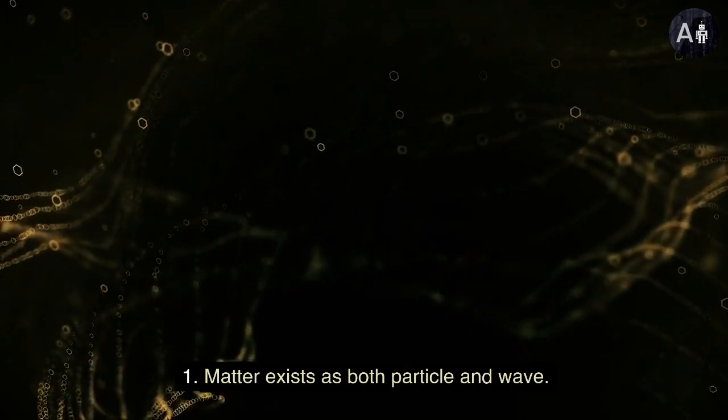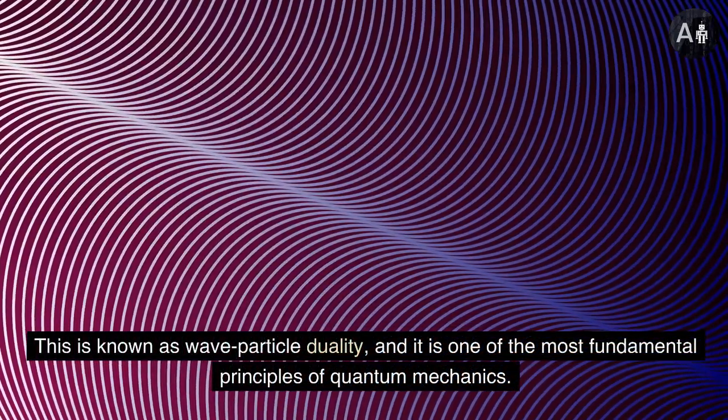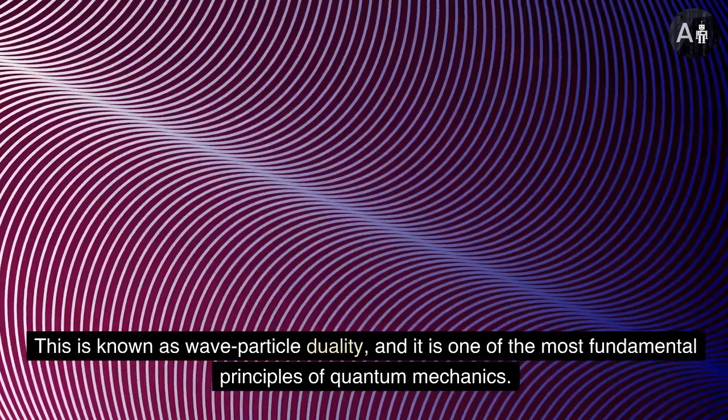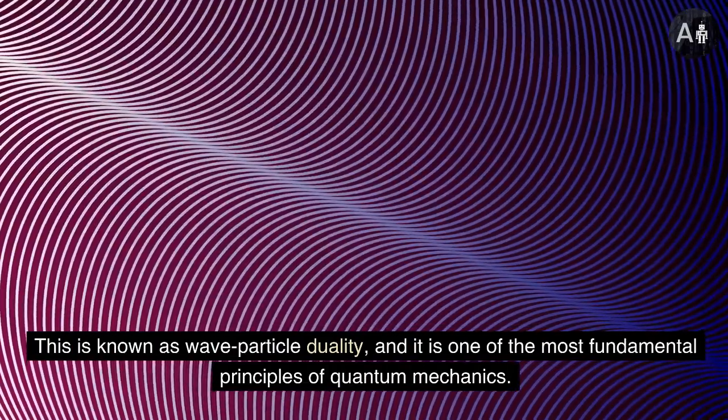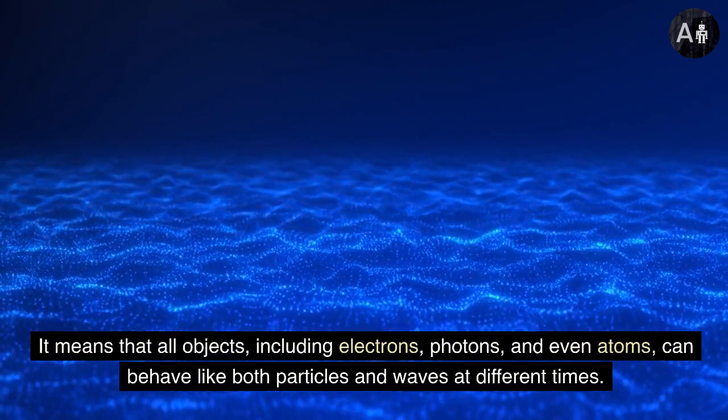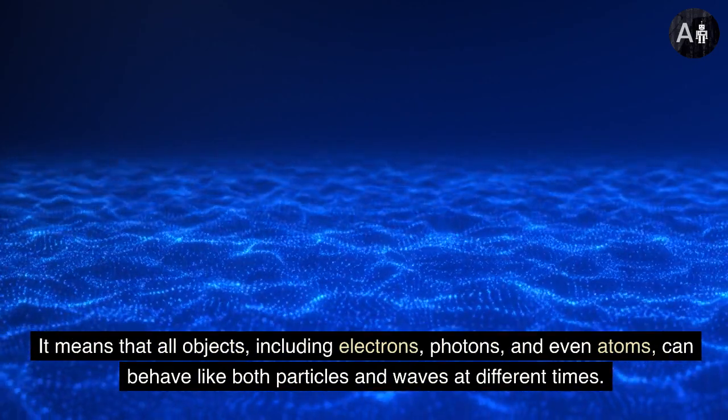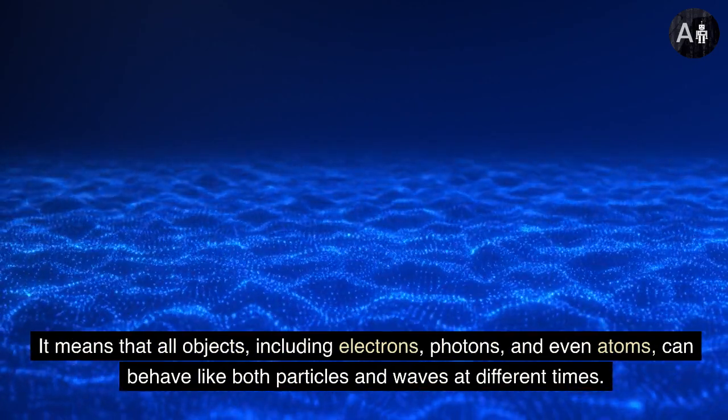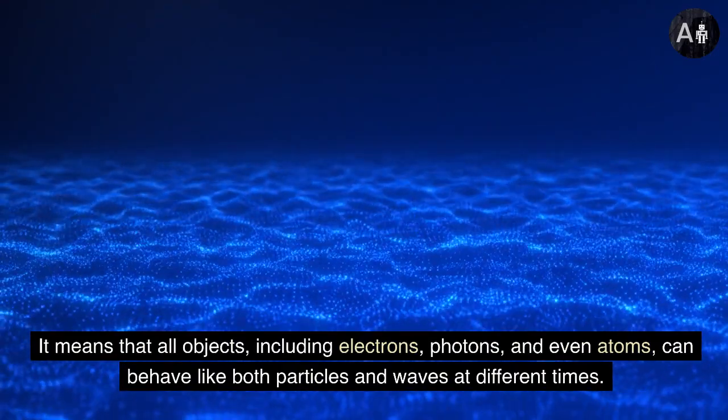Matter exists as both particle and wave. This is known as wave-particle duality, and it is one of the most fundamental principles of quantum mechanics. It means that all objects, including electrons, photons, and even atoms, can behave like both particles and waves at different times.